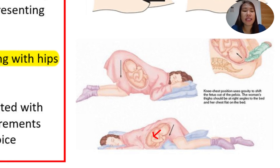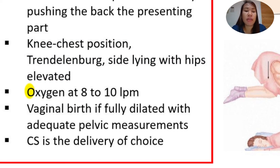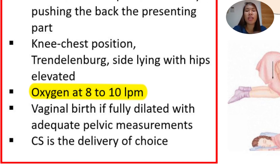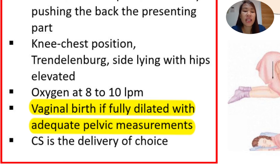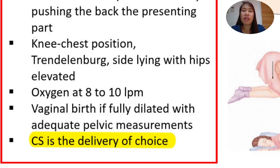Aside from these, another management is giving the mother oxygen at 8 to 10 liters per minute. If we give the mother oxygen, it will also provide oxygen to the baby, helping to save the baby. Vaginal delivery may be done only if the cervix is fully dilated and with adequate pelvic dimensions. If the cervix is fully open, that is the only time vaginal delivery is possible. Otherwise, our delivery of choice is cesarean section.